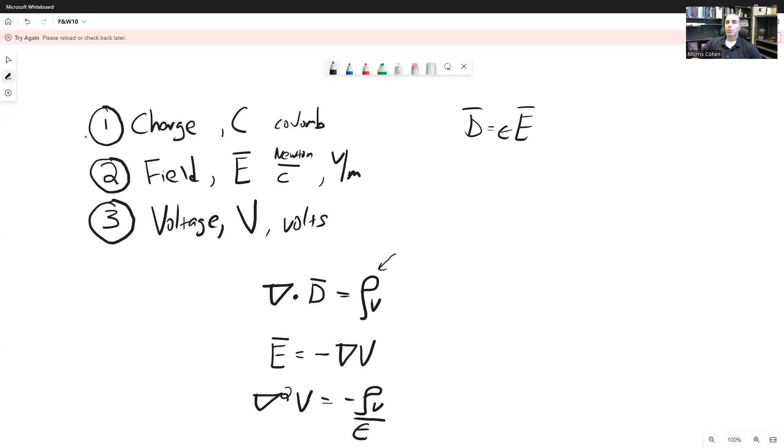And so the one thing we have not covered is how do charge and voltage relate to each other. And so we're going to get ourselves to a relationship Q equals C times V. C is what we're going to call the capacitance.